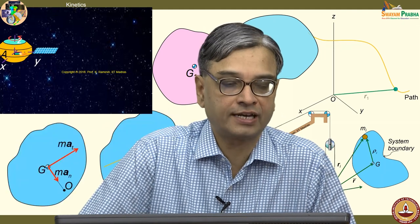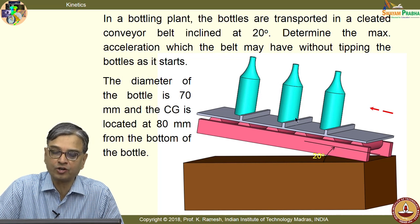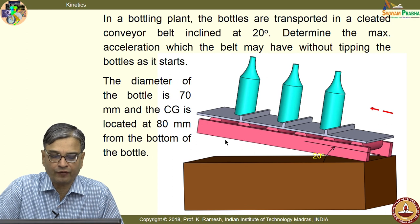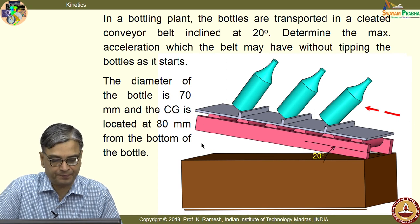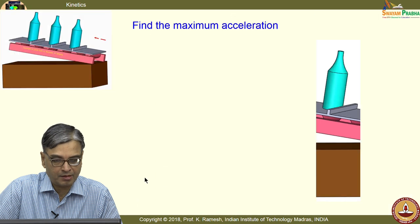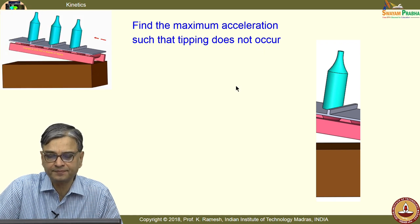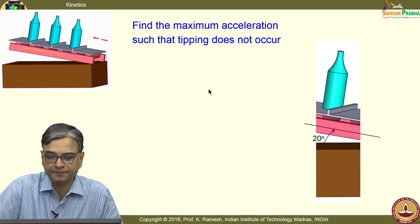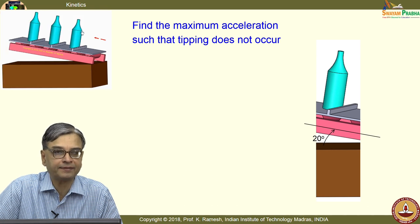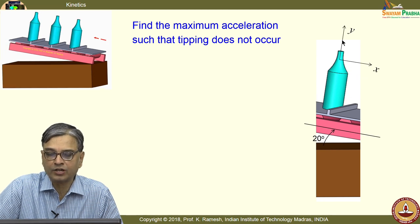Let us continue with the discussion on kinetics. In the last class, we understood the requirement of this problem. We need to find out what is the maximum acceleration that can be tolerated by the system so that these bottles do not tip. The question is to find the maximum acceleration, and we need to put the free body diagram of the bottle and investigate for tipping. We have learnt in statics how to investigate for tipping.